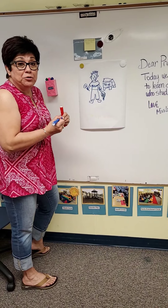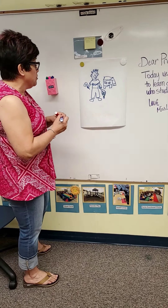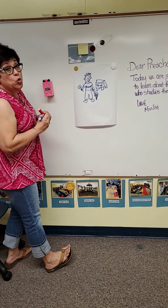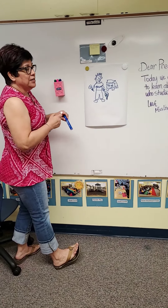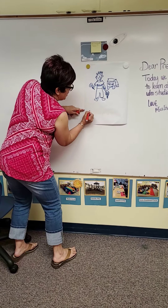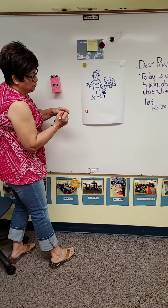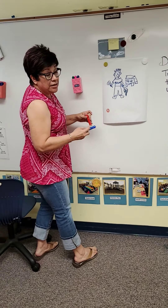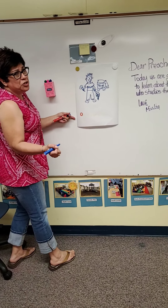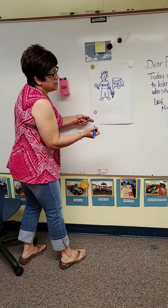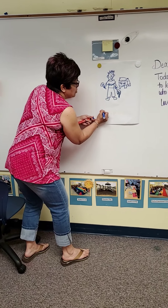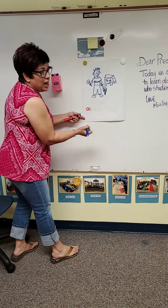Next we're going to count the letters and see what letter oceanographer starts with. Can you guess what letter is the first letter in oceanographer? It's the letter O. And next we have the letter C, and this letter is kind of tricky because it can make two sounds. In this word, it's the soft letter and it makes the "sss" sound — letter C.